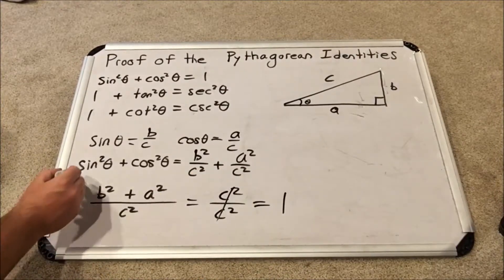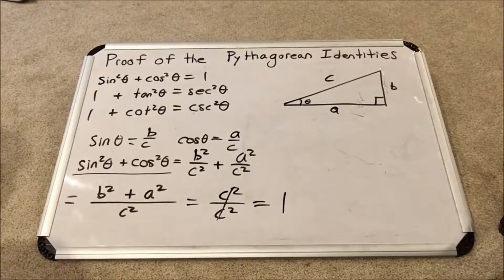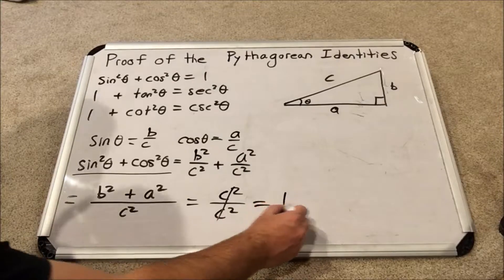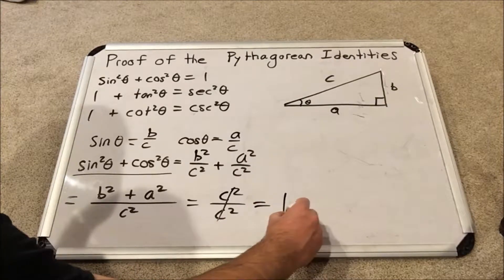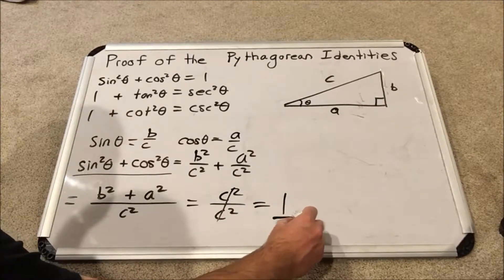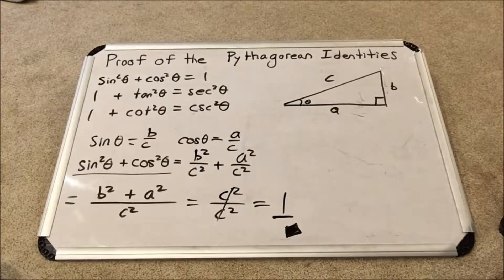Thus, sine squared theta plus cosine squared theta equals 1. We have proved the first trigonometric identity.